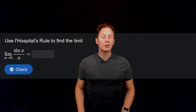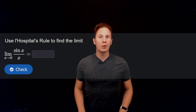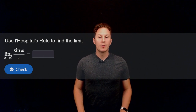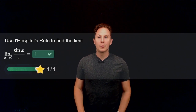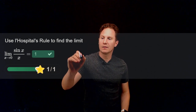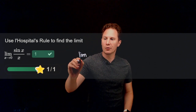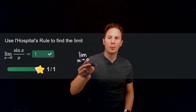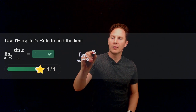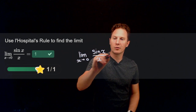Use L'Hôpital's rule to find the limit as x approaches zero of sine of x over x. This limit is equal to one. This is of an indeterminate form zero over zero, so L'Hôpital's rule can be applied to find the limit of sin(x) over x as x approaches zero.